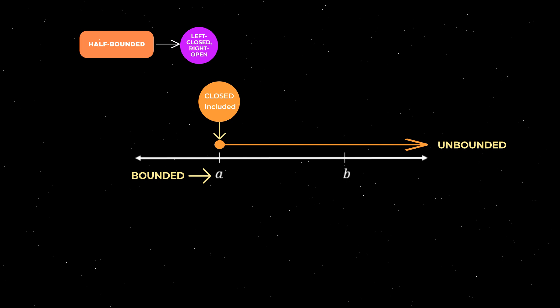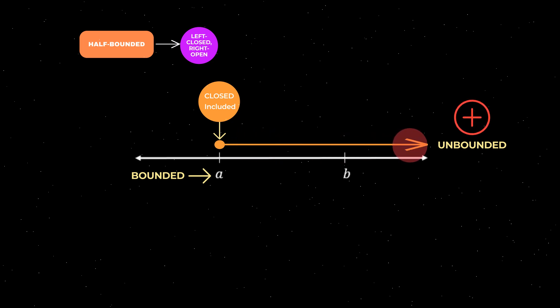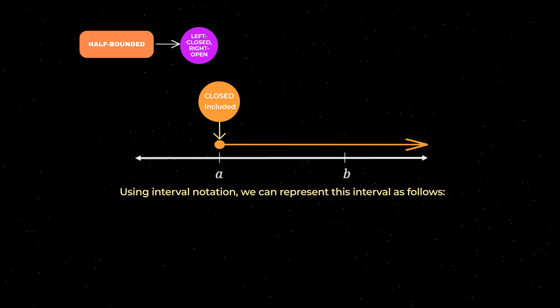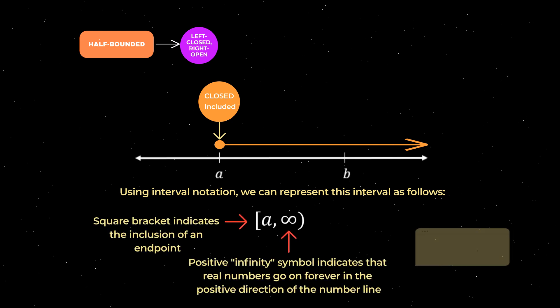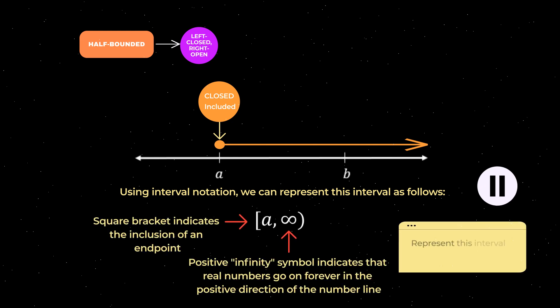In contrast, on the right, the interval is open because the real numbers go on forever, in this case in the positive direction of the number line. Using interval notation, we can represent this half bounded left closed right open interval as follows. As a review exercise, pause this video and try to represent this interval in set builder notation, then press play and I will go through the solution.